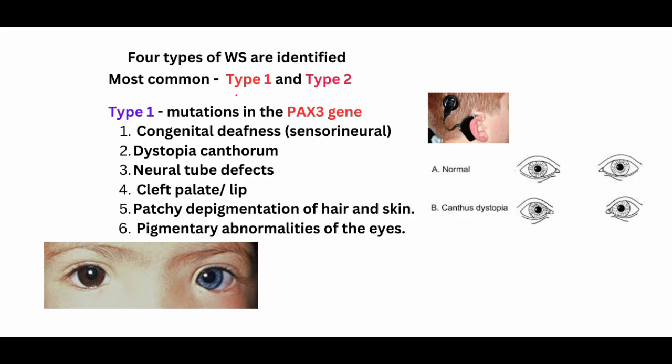There are four clinical variants, type 1 to type 4. Type 1 and 2 are the most common; type 3 is very rare. Type 1 is due to mutation of the PAX3 gene, which is associated with sensorineural hearing loss, dystopia canthorum, patchy pigmentation of the hair and skin, neural tube defects, cleft palate, cleft lip, and pigmentary abnormalities of the eyes. The characteristic histopathological finding is the absence of melanocytes.